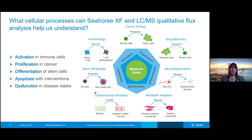Now that I've given a little bit of background on both of these technologies, I want to cover a couple different examples and share what these technologies can help us understand. There are a lot of different things that cells can do — they can rewire their metabolism in response to external stimuli. When cells change their function, some functional changes include activation, proliferation, differentiation, apoptosis, and dysfunction. The examples I'll be covering include looking at the activation of macrophages, the cool temperature adaptation of adipocytes or fat cells, and fuel sources for cancer cells.